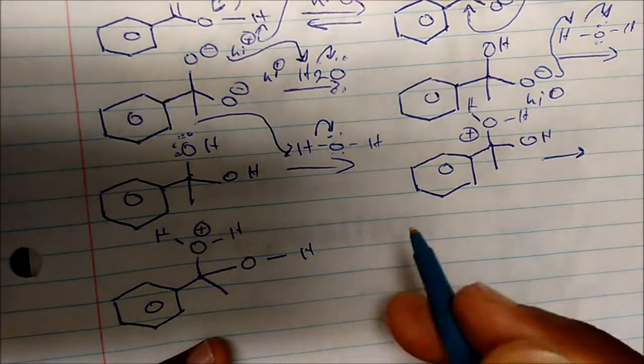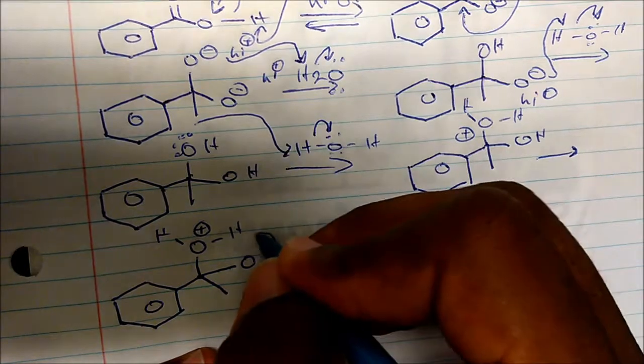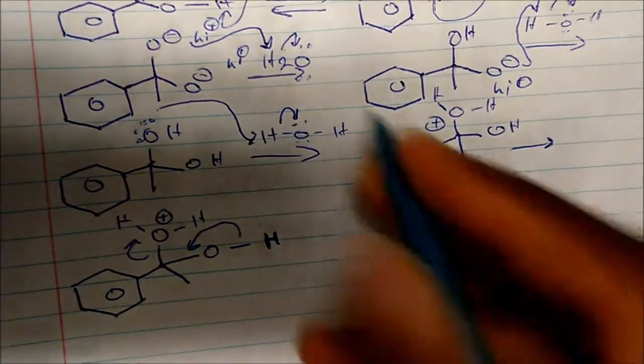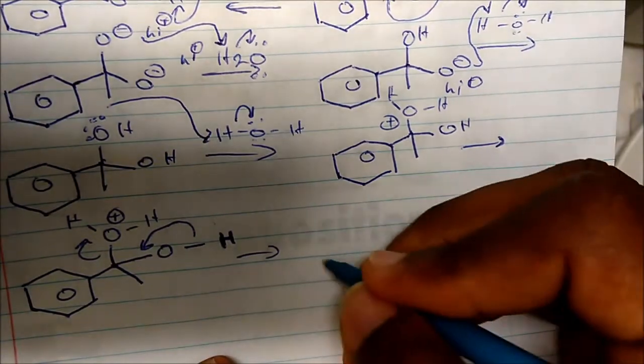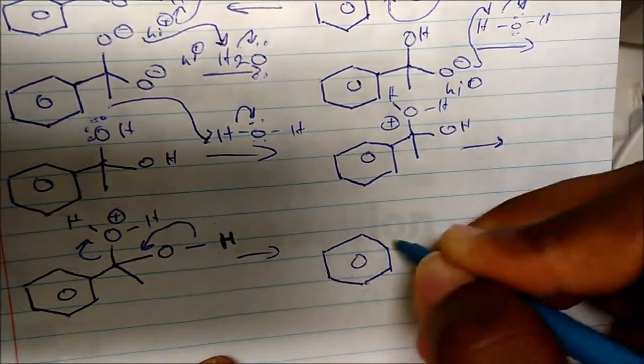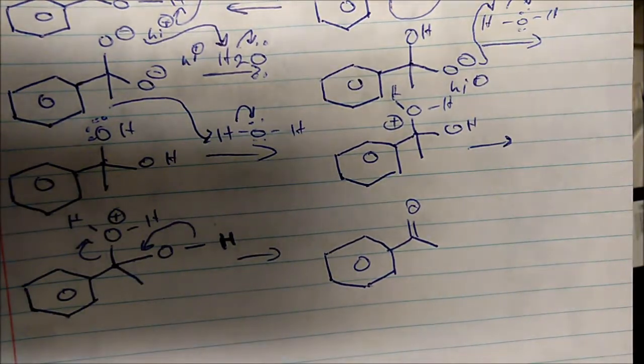So the last step in mechanism, it so happens that water now is a great leaving group, so these electrons will come in, form the double bond, and expel water as a leaving group. And so what do we get? We get acetophenone.